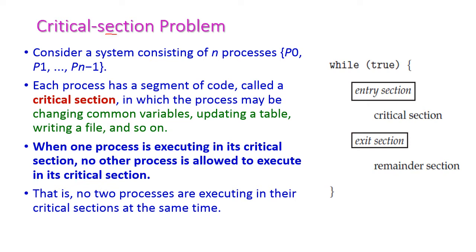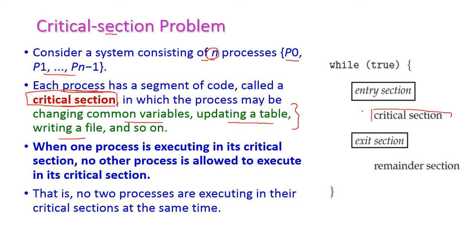Consider n processes — P0 to Pn minus 1. Totally n processes are there and each process has a common set of code which is called the critical section. This critical section is common for all the processors, and this may be common variables, updating a table, writing a file, and so on. We have to identify which is the common code for all the processors — that is called the critical section.